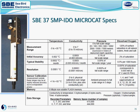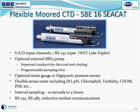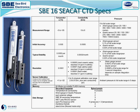Here's the spec list for the MicroCAT — high accuracy temperature, great stability, as we see on all Seabird products. If you need more flexibility in the type of instruments for your moored long-term deployment application, we have the Seabird 16 CCAT. This has six or eight input channels, optional pump, and optional strain gauge or DigiQuartz pressure sensor. Besides CTD, you can add DO, pH, chlorophyll, turbidity, CDOM, PAR, etc., with a variety of different interval sampling opportunities. It has real-time capability including inductive modems. The CCAT accuracy and stability specs for long-term deployment capability are similar to the MicroCAT.